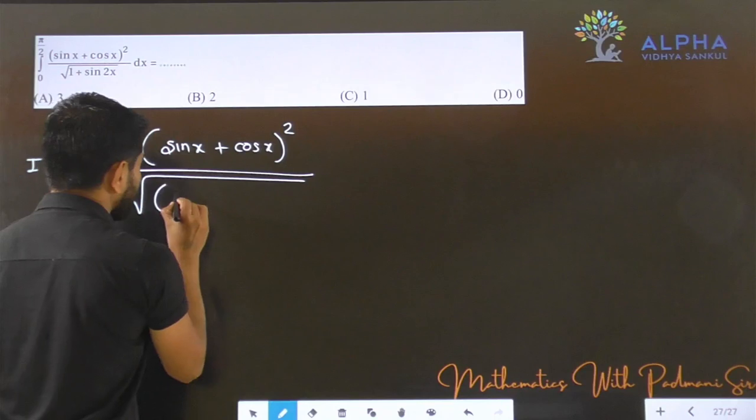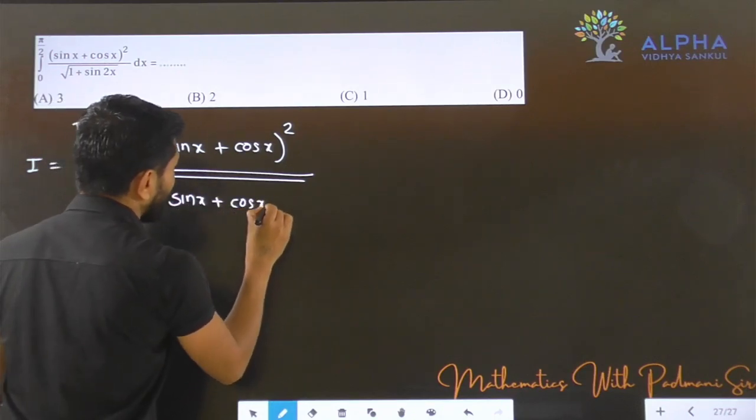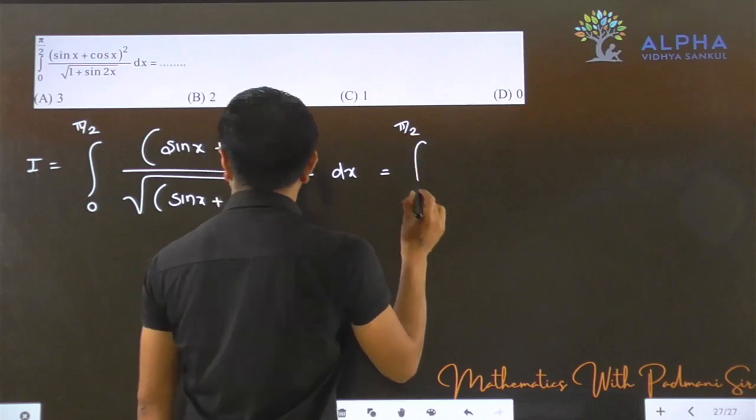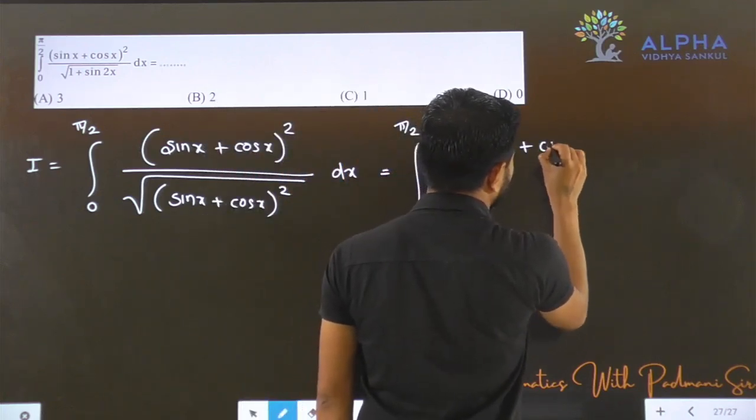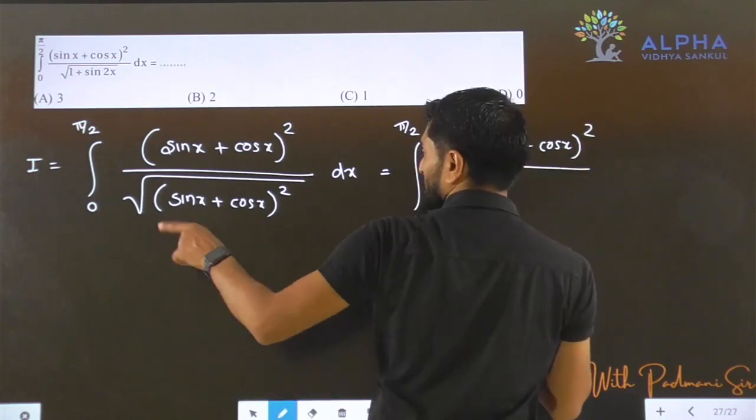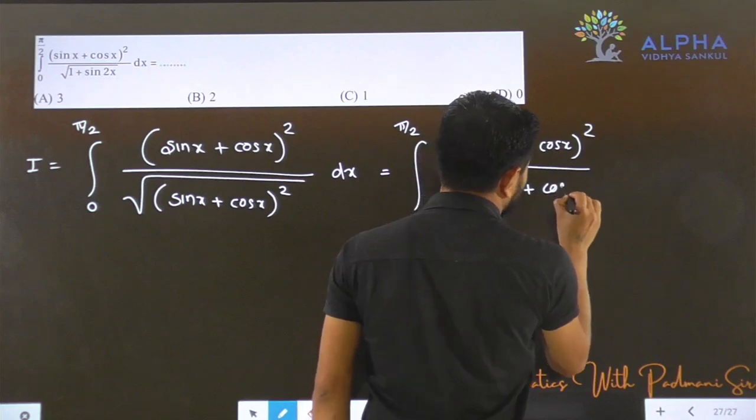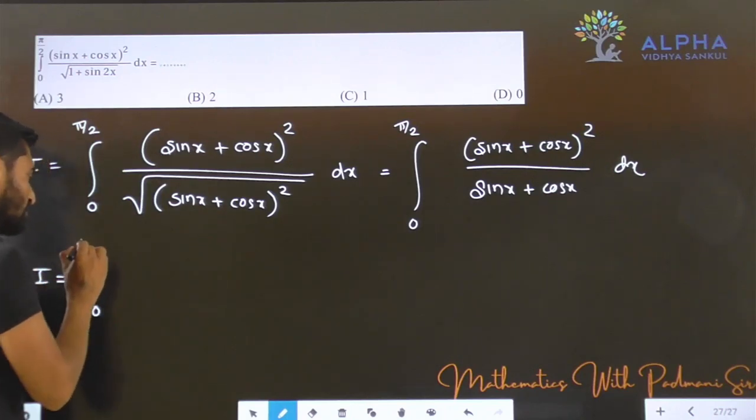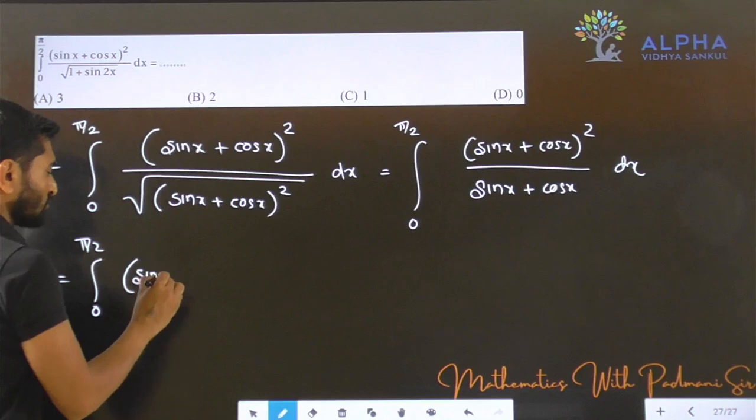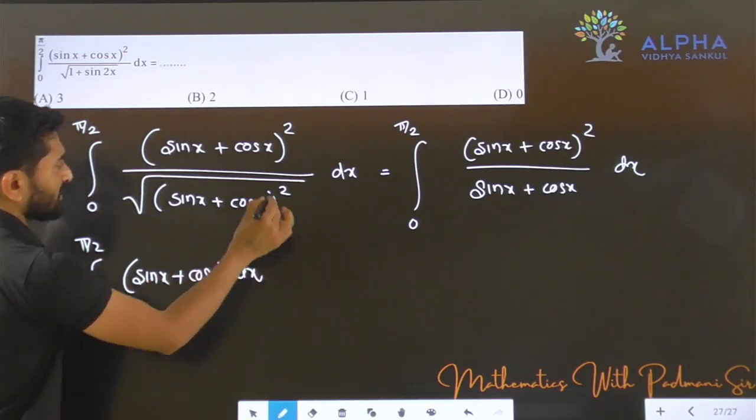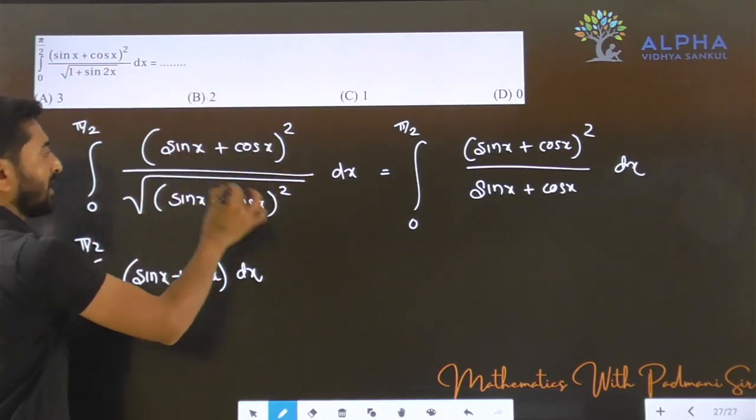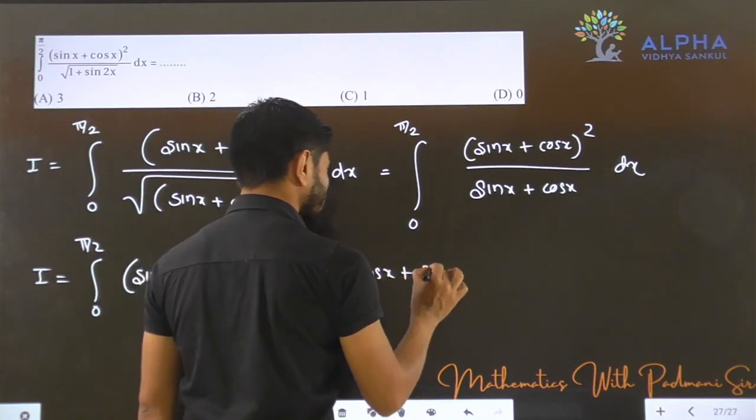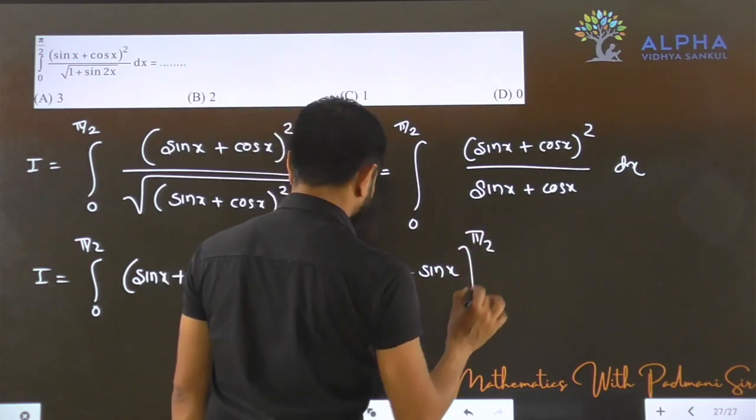So 1 plus sin 2x kai nah tha sin x plus cos x no. When we take the square root below, the square cancels out, so we get sin x plus cos x.